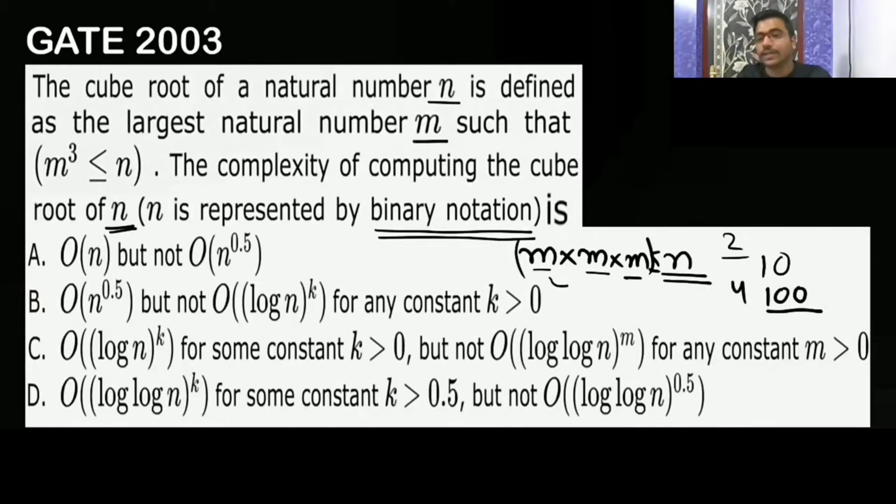By using binary search you can find this. You apply binary search, go to the middle number, and check whether if you do the cube of the middle number it is smaller than or equal to n. If not, you go left or right. By modifying binary search we can find the cube root, and in the worst case it is going to be O(log n).